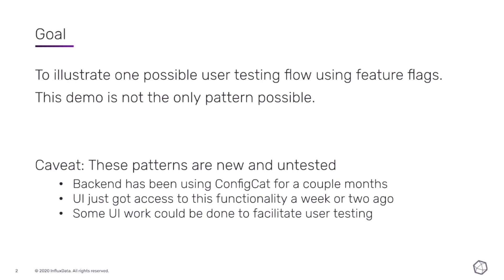Today we're just going to show one pattern where we've got specific users in mind and we want to show them different prototypes. Quick caveat — these patterns are new and untested. The backend has only had ConfigCat enabled for a couple of months, the UI just got access, so there's probably some work to do to facilitate this user testing and iron out some kinks. But this is what we've got so far.